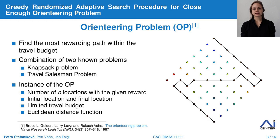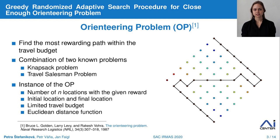This task, named the Orienteering Problem, further denoted as OP, was firstly introduced in 1987 by Golden and Bora. It was derived from a sport called Orienteering, where the competitors managed to visit the most rewarding places within some time limit. It can be described as a combination of two combinatorial problems: the Knapsack problem to determine the subset of locations to meet the travel budget, and the Traveling Salesman Problem to find the shortest sequence of places within the subset. On the right side, you can see an example of an OP instance with a possible solution.